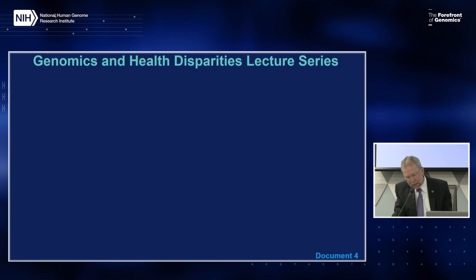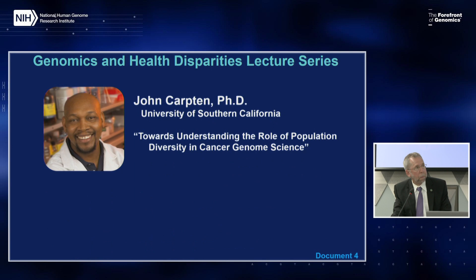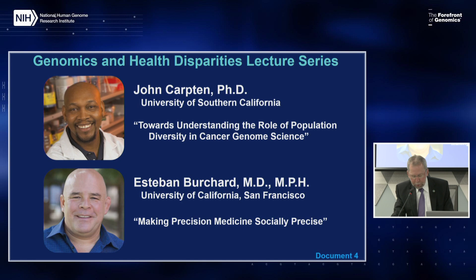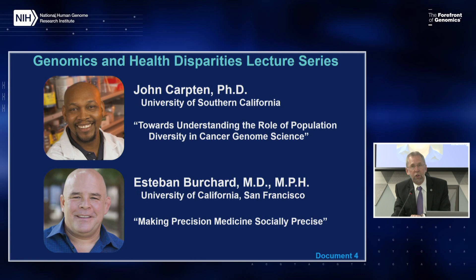NHGRI, along with the National Heart, Lung, and Blood Institute, National Institute of Minority Health and Health Disparities, National Institute of Diabetes and Digestive and Kidney Disorders, and the FDA Office of Minority Health, continued the Genomics and Health Disparities Lecture Series with two speakers this fall. John Carpton, chair of the Department of Translational Genomics at the University of Southern California, spoke in August about population diversity in cancer genomics. Esteban Bouchard, Professor at UC San Francisco, gave a lecture earlier this month on making precision medicine more socially precise. All lectures are video recorded and available on NHGRI's Genome TV YouTube channel.